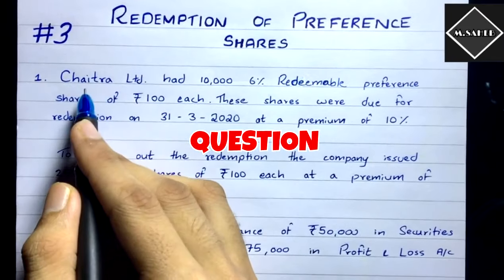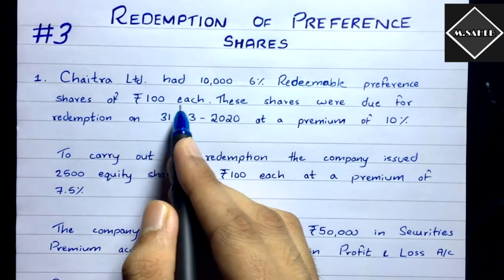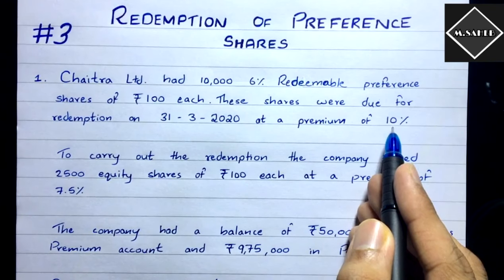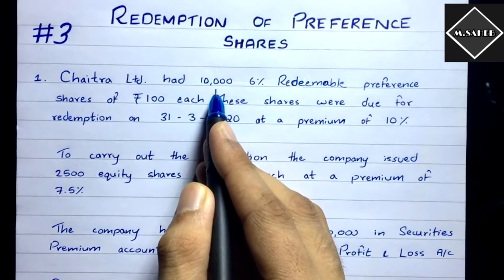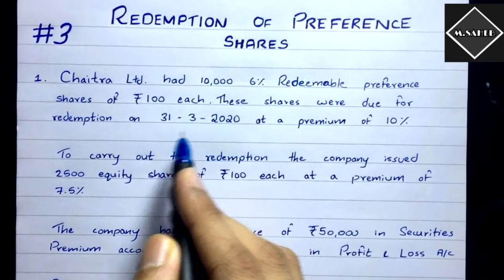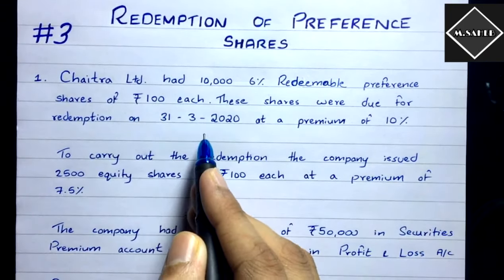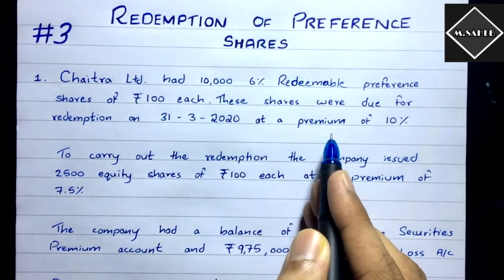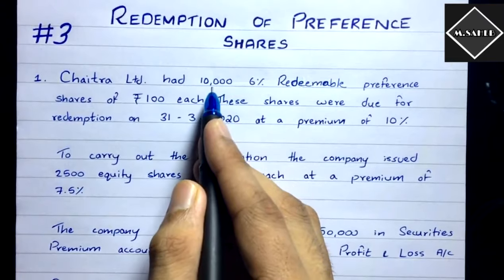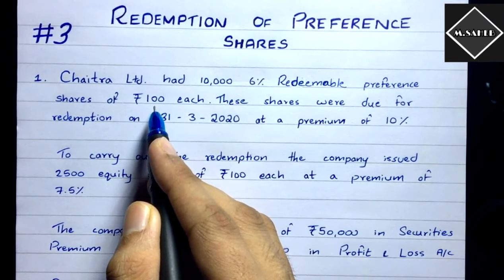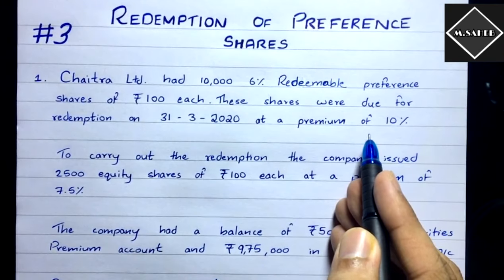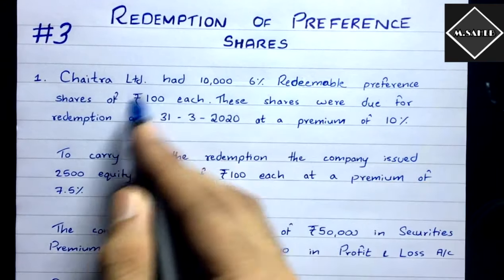Here's the question: Chetra Limited had 10,000 six percent redeemable preference shares of ₹100 each. These shares were due for redemption on 31st March 2020 at a premium of 10%. The total preference share capital is 10,000 × ₹100 = ₹10 lakh. We are also paying a premium of 10%, which is ₹1 lakh, so the total payment to preference shareholders is ₹11 lakh.